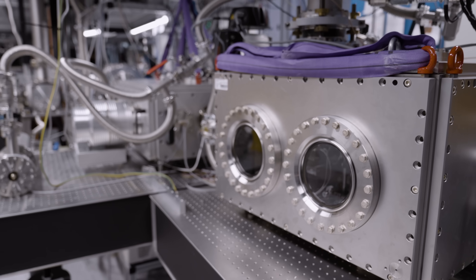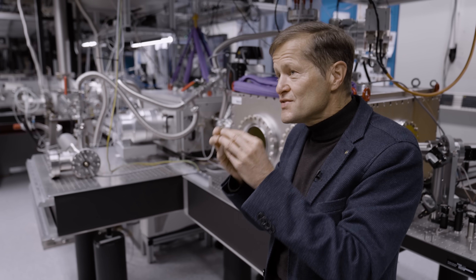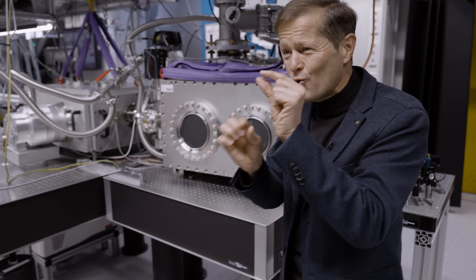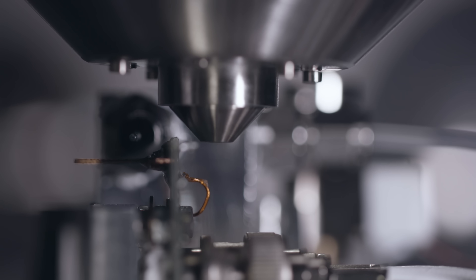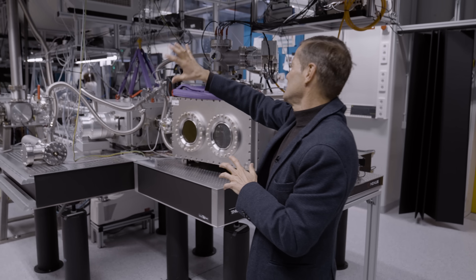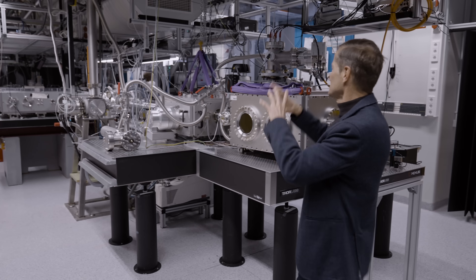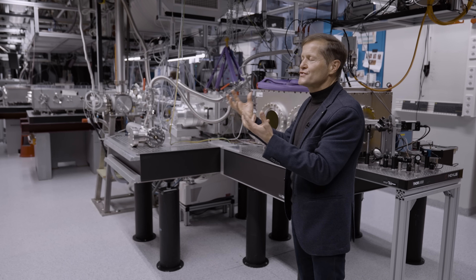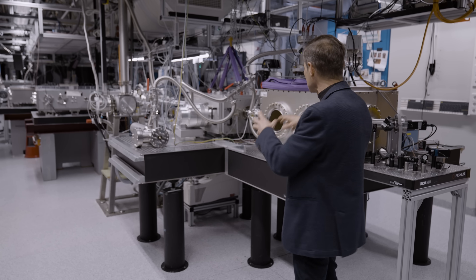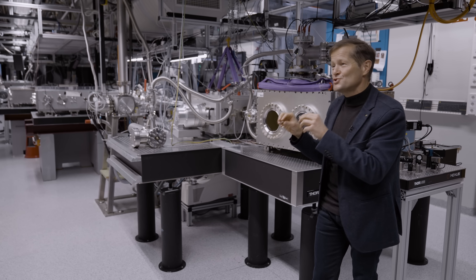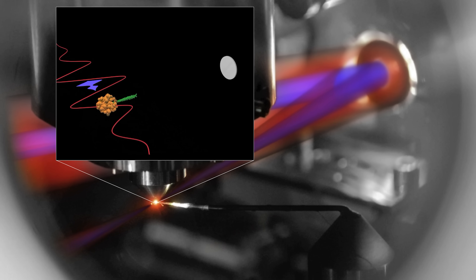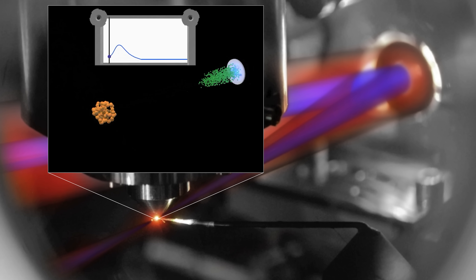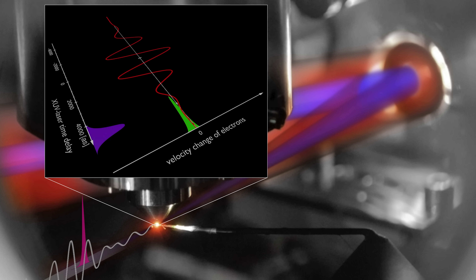The actual interaction region where the attosecond photography takes place is really very small. We need to build a big apparatus starting with the laser, then with the attosecond pulse generation, and with all the degrees of freedom to manipulate these two beams — to eventually be able to investigate the processes in a tiny little volume that is a really tiny fraction of the size of the whole infrastructure needed for that.